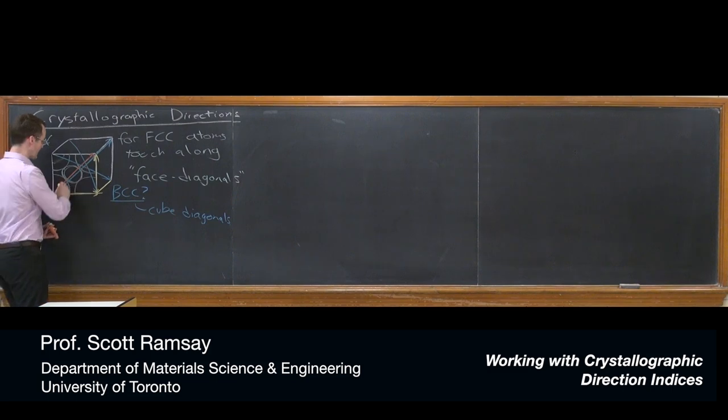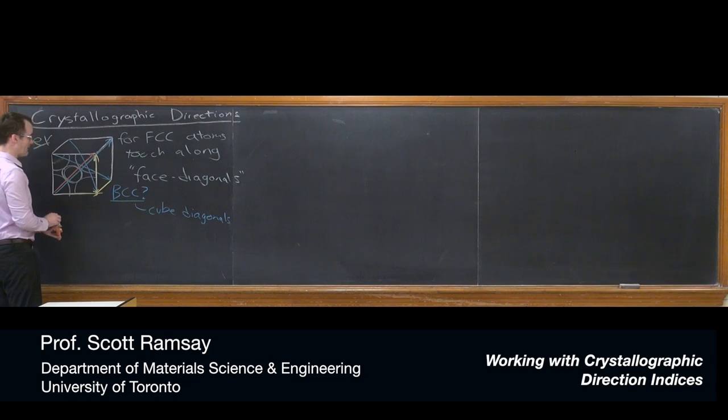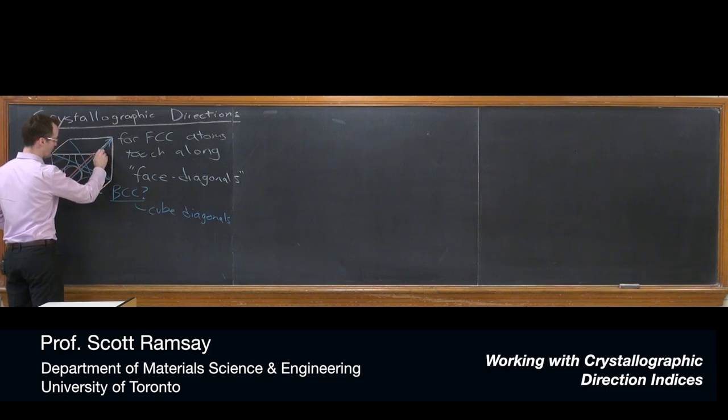What if I wanted to describe this blue vector that I drew going from this bottom front left to the back top right? Well, I can say it's that cube diagonal that originates at the bottom front left and so on. But that's a very tedious way to describe. It takes a lot of words. Instead, it would be nice if we could use a compact little mathematical notation. That's what crystallographic directions are all about.